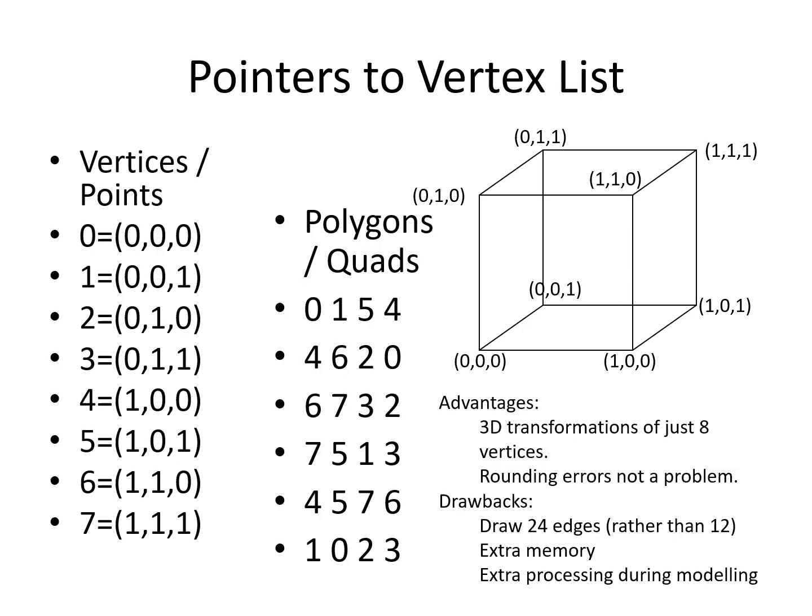The next method is probably the most common. In this case, all points are stored uniquely in an array. In this case, the eight vertices are stored in the array as on the left. Then each face is made up of indexes into the array in order to describe which points make up that face. In this case, any 3D transformation can operate on just the eight points. Also, if the user picks the bottom right-hand vertex, then it is unambiguous as to which point they have selected.